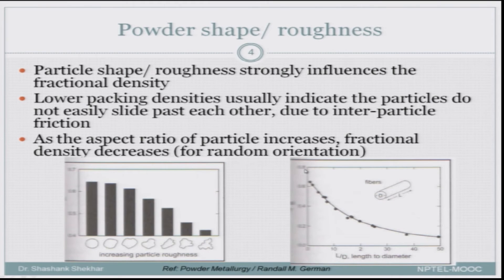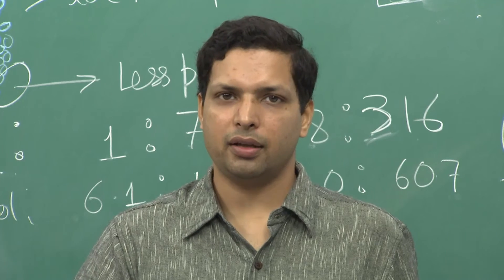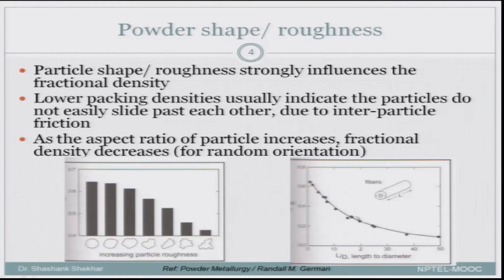Even the aspect ratio of particles can change overall packing fraction significantly. Taking cylindrical fibers as particles, as you increase the L over D ratio (aspect ratio), the theoretical density continuously decreases. At small aspect ratios the packing fraction is highest, and as the aspect ratio increases it drops to as low as 0.1, demonstrating how dramatically aspect ratio can reduce packing efficiency.